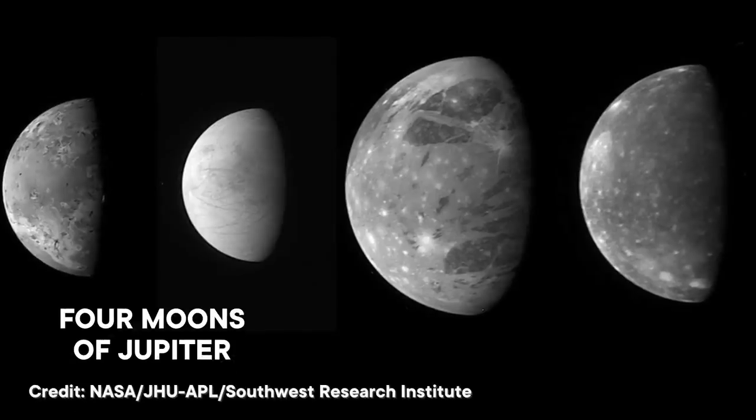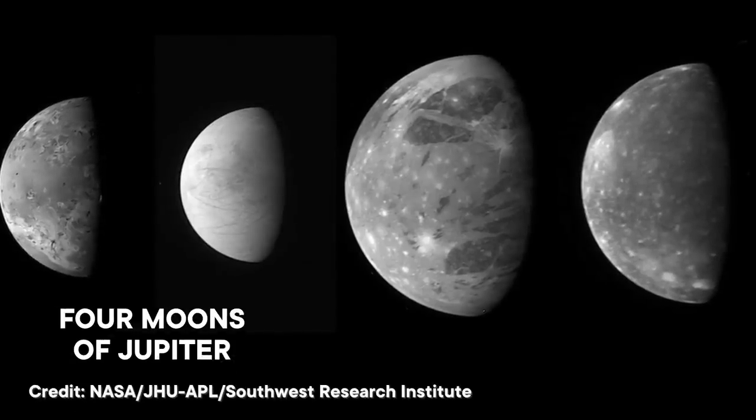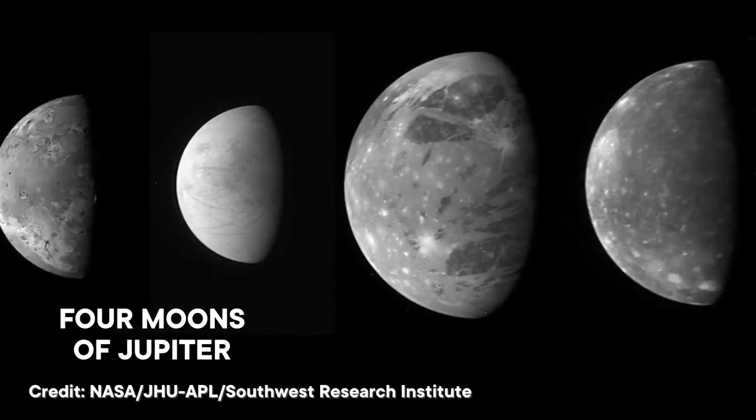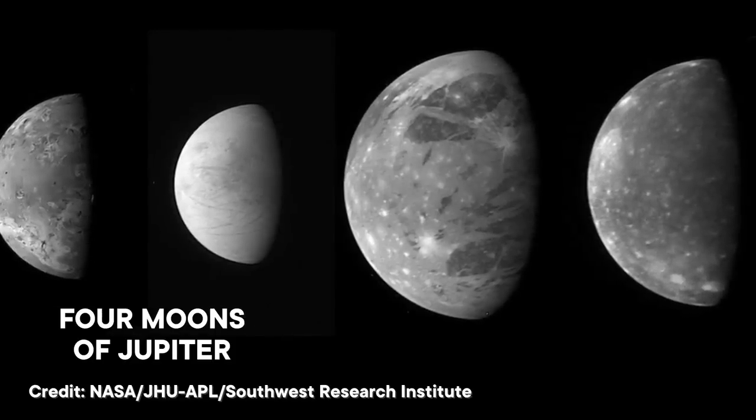Within our own solar system, Jupiter and Saturn each have dozens of moons, and a few of them are seen as the best candidates for life in our solar system, outside of Earth, of course. So let's take a look at a couple of Saturn's moons and see how what we've learned from them has allowed us to expand our search for life in the universe.